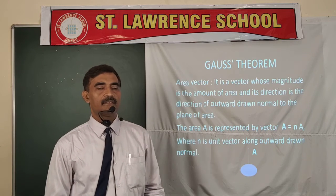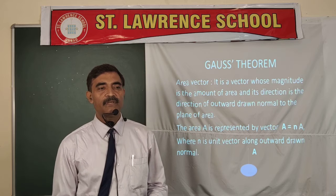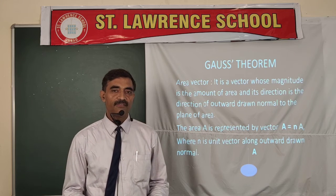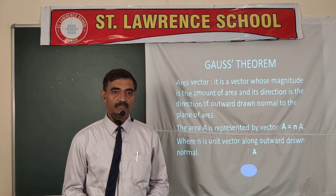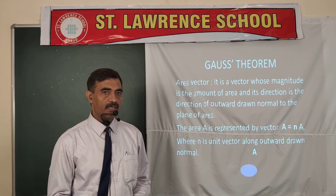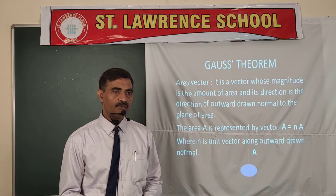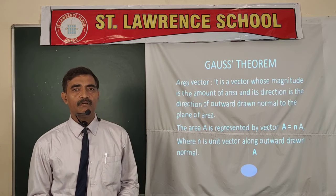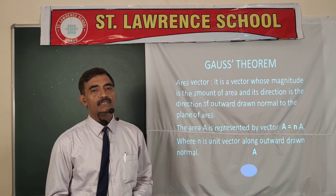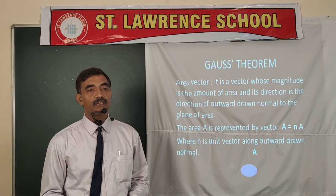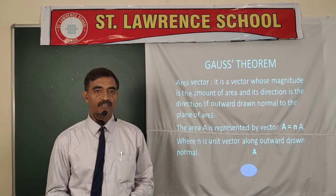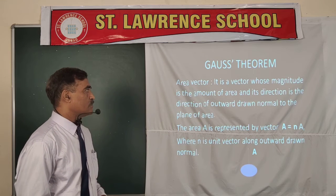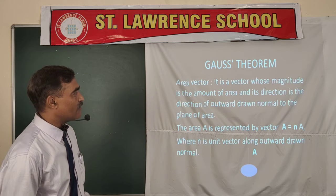In the Gauss theorem, we basically use it for calculating the electric field due to different charged bodies. Due to the point charge, we have already discussed the electric field in the previous chapter. Now in this chapter, we will discuss the electric field due to different charged bodies of different shapes. So before going to the Gauss theorem, we should know some terms — the first is the area vector.